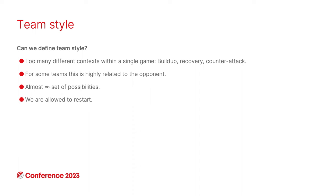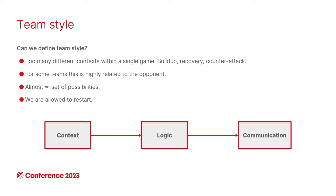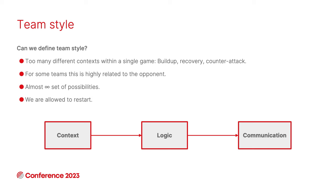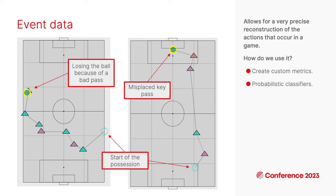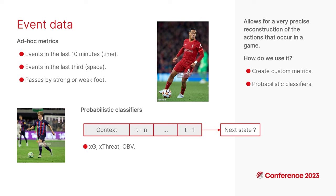Defining team style is actually very challenging because there are many different situations during a football game. Teams might be looking for specific goals in a given moment, changing how they play depending on the opponent, and the set of possibilities a team can perform on the field is almost infinite — it's not like chess where you can computationally foresee possible outcomes. So in this project we wanted to provide an end-to-end methodology: first isolate the context, then extract team style from that context, and finally communicate it to support stakeholders. We use event data because it's a precise reconstruction of the game.